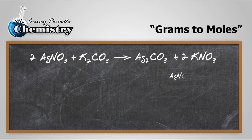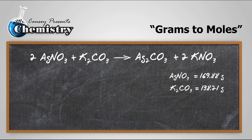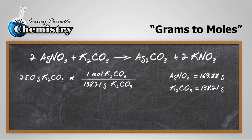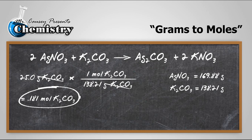Grams to moles. We're going to take grams of potassium carbonate and change it to moles of potassium carbonate. I believe we had 25 grams according to the problem, and there are 138.21 grams per mole. So what we will do is we will multiply by the ratio. The grams will cancel out, plug and chug, and we have 0.181 moles of potassium carbonate.